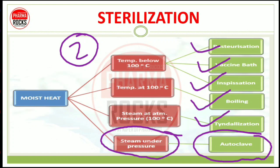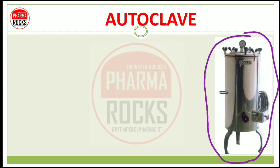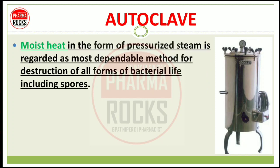You can also see the pinned comment to check about the previous parts. So let's start about the autoclave. In the pharmaceutical microbiology lab, aapne is tarah ka jo instrument dekha hoga, usko kehte hain Autoclave. So autoclave ka main use kya hai — vo use hota hai in moist heat sterilization.